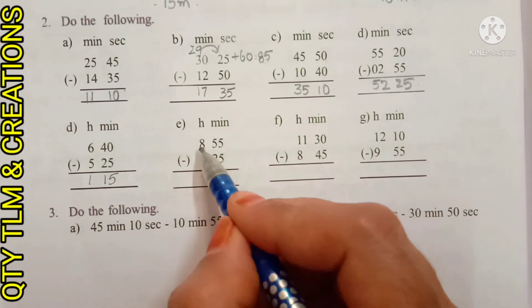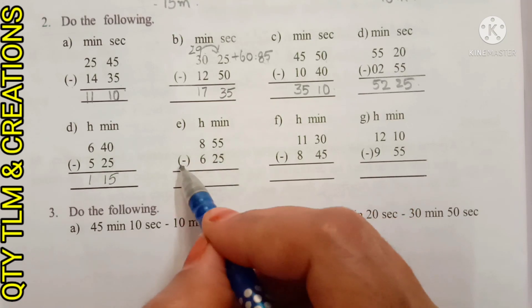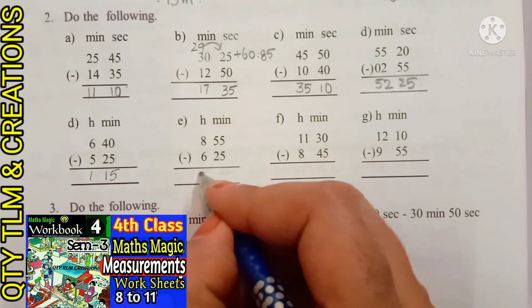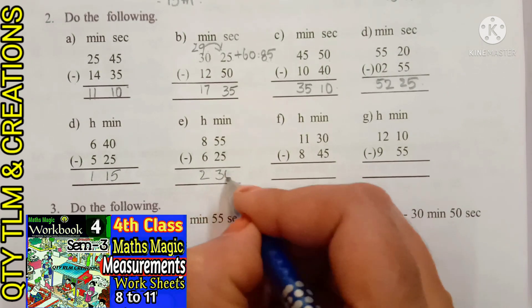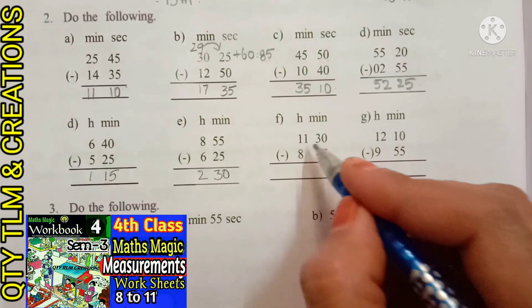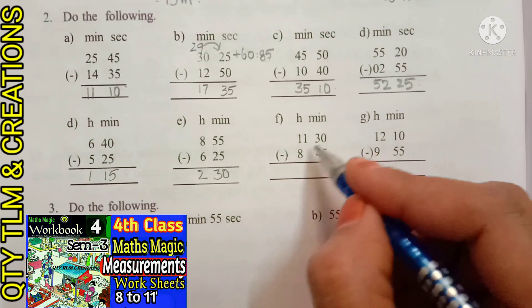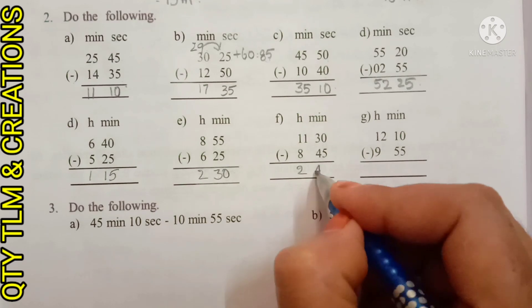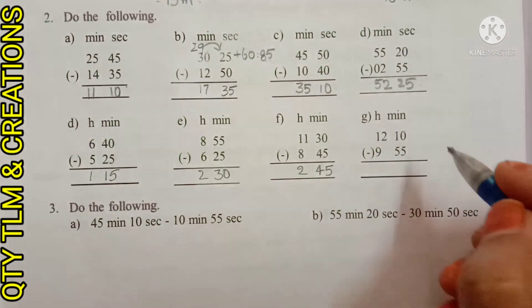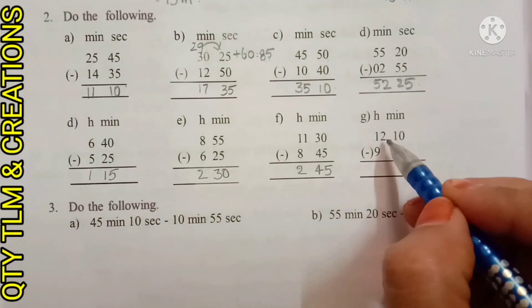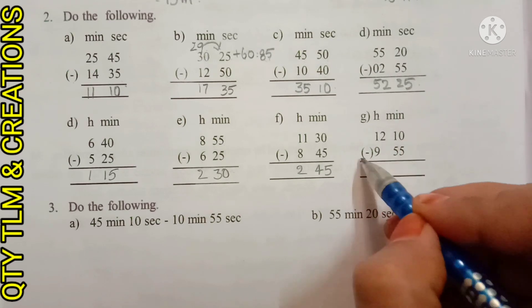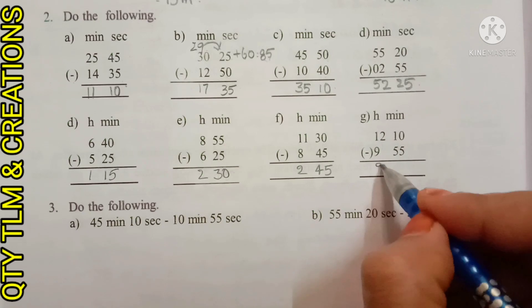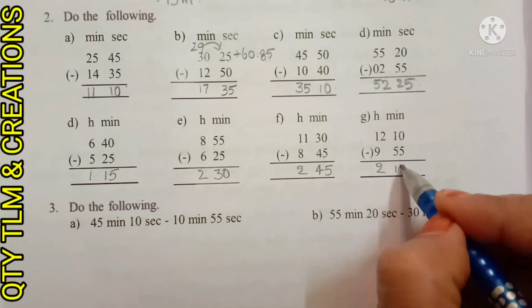Next, F) 8 hours 55 minutes minus 6 hours 25 minutes. We will get 2 hours 30 minutes. G) 11 hours 30 minutes minus 8 hours 45 minutes. We will get 2 hours 45 minutes. H) 12 hours 10 minutes minus 9 hours 55 minutes. We will get 2 hours 15 minutes.